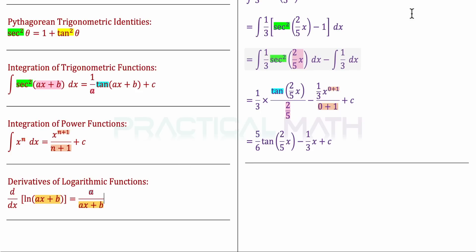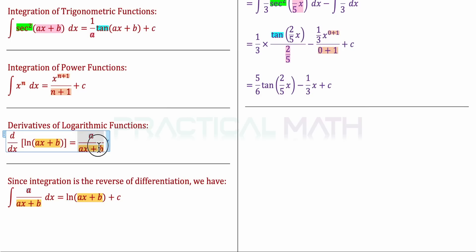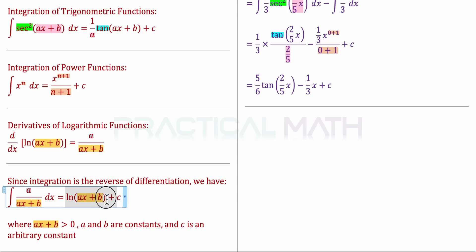Since integration is the reverse of differentiation, we can infer that ∫a/(ax+b) dx = ln(ax+b) + C. There are conditions to include because of the ln: ax+b must be greater than 0, since ax+b is the argument of the logarithm. Here A and B are constants, and C is the arbitrary constant. With this in place, we can start integrating part B.